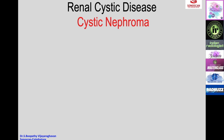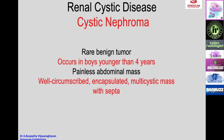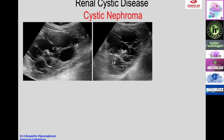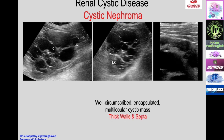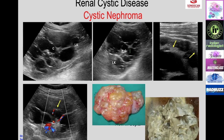Cystic nephroma is a rare benign tumor occurring in boys younger than four years, presenting as a painless abdominal mass. On ultrasound it appears as a well-circumscribed encapsulated multilocular cystic mass with septa. On high frequency, thick walls and septa are seen, and on color Doppler there is flow in the septa, leading to the diagnosis of cystic nephroma.